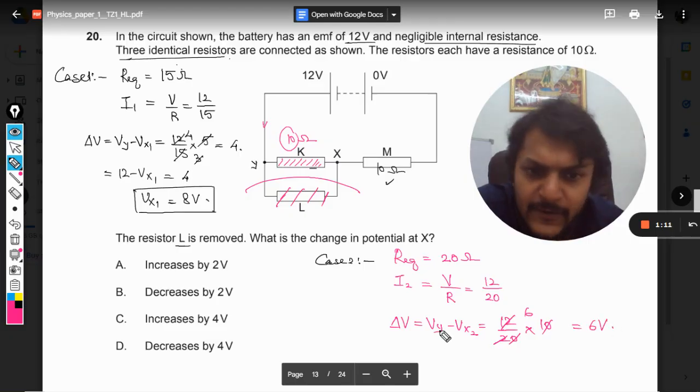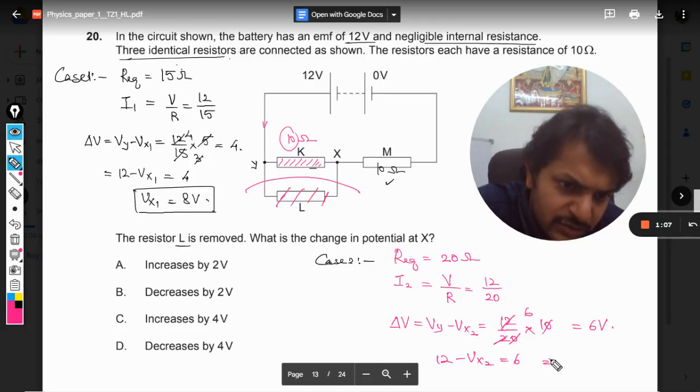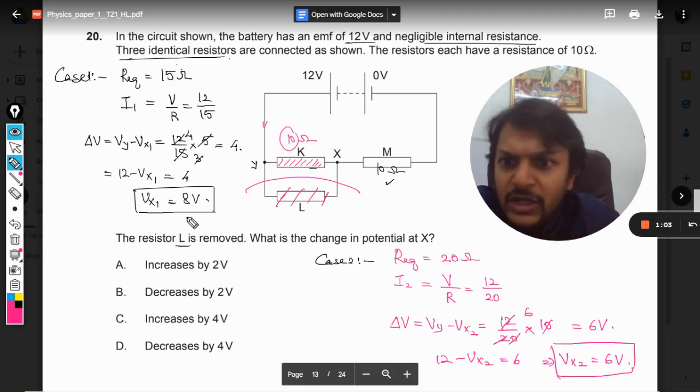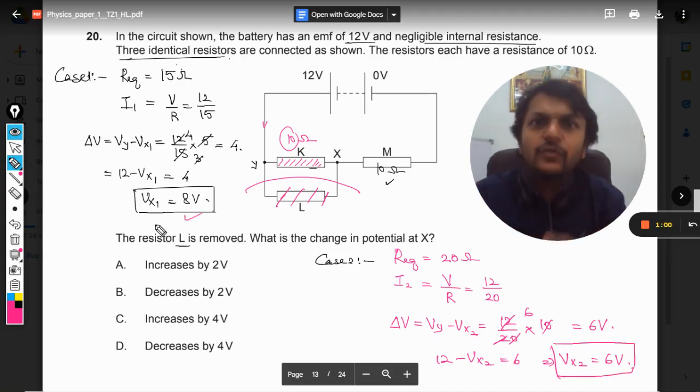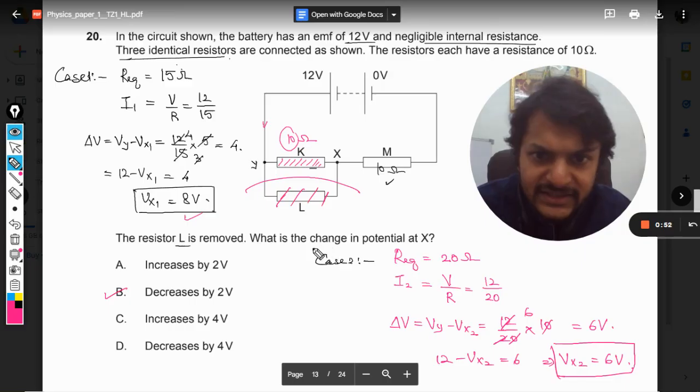And the current is 12 by 20 into 10, so it is coming out to be 6 volt. And Vy is 12 minus Vx2 is equal to 6. This implies Vx2 is equal to 6 volt now. So earlier it was 8 volt and now it is coming out to be 6 volt. So we can say that the change in the potential in X is it decreases by 2 volts, because earlier it was 8 and now it is 6.